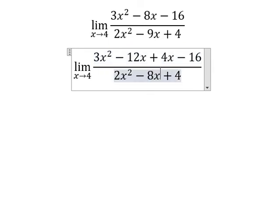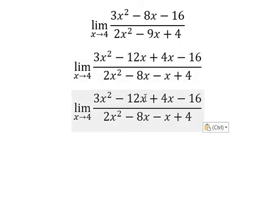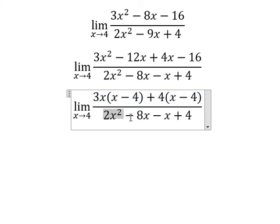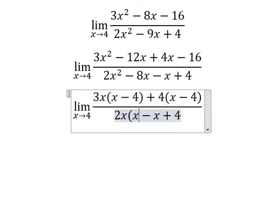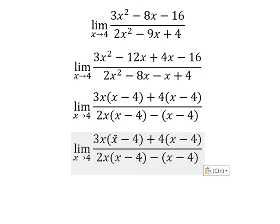This one we can put into 8x minus x. Now we can do factorization by 3x this one, by number 4 this one, by 2x this one, by negative number 1. Now x minus number 4, x minus number 4.